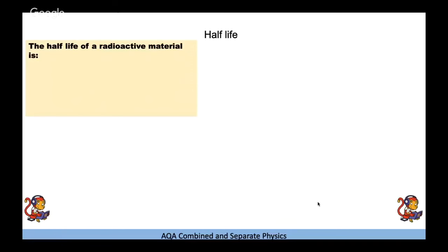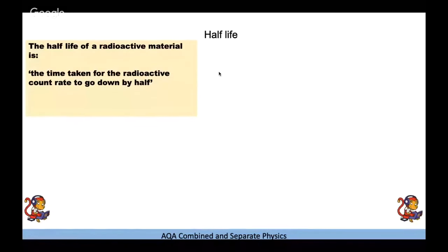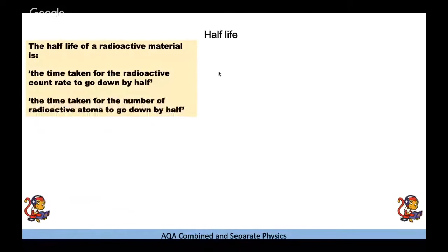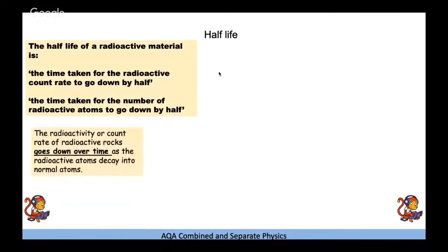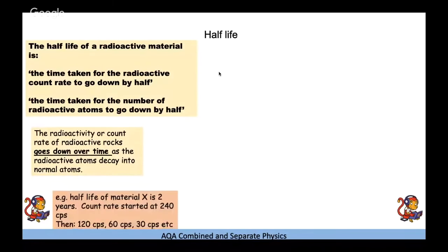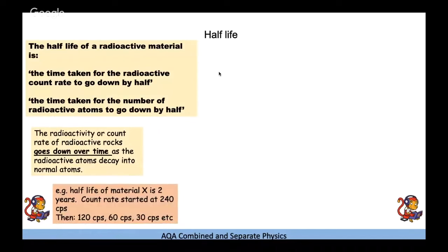Half-life is the time taken for the radioactive count rate to halve, or for the number of radioactive atoms to halve. The count rate of any radioactive substance decreases over time. For example, if material X has a half-life of 2 years and starts at 240 counts per second: after 2 years it drops to 120, after another 2 years to 60, and so on - going down by half each time.